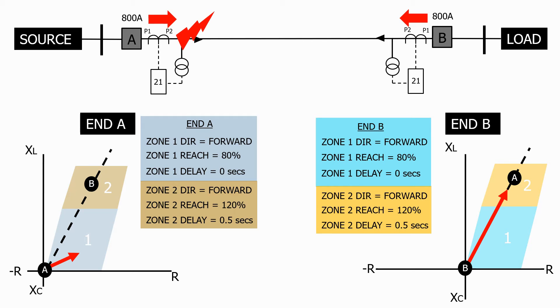The fault is now seen by the impedance relays at end A and end B. The end A impedance relay sees it in zone 1, whilst the end B relay sees it in zone 2. The zone 1 at end A is instantaneous and trips immediately, clearing the fault current from end A.